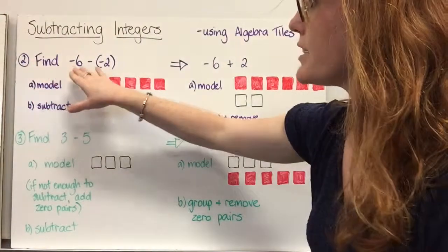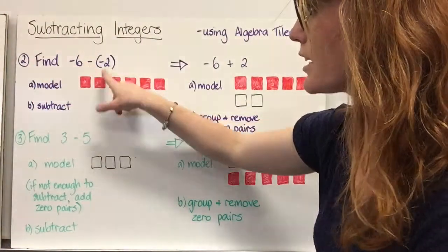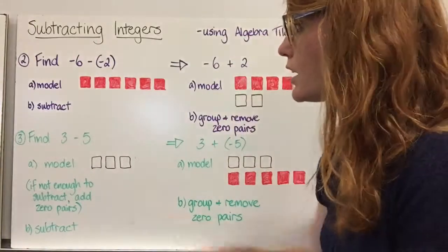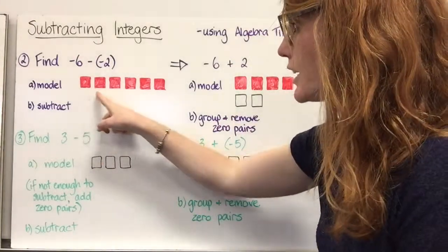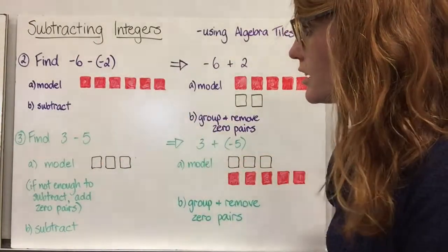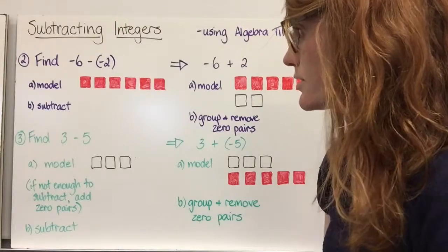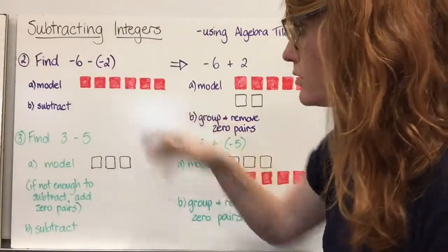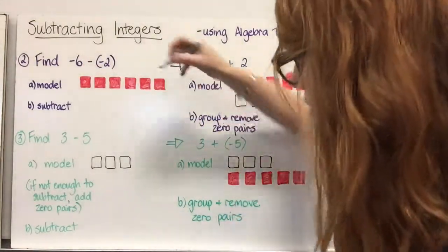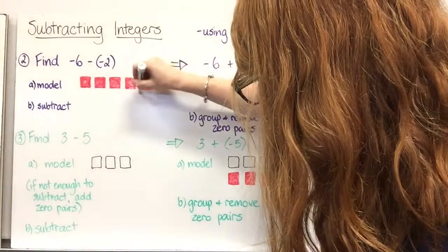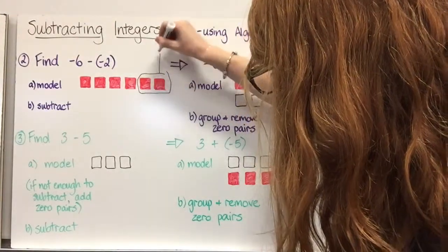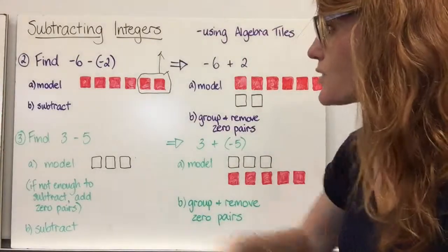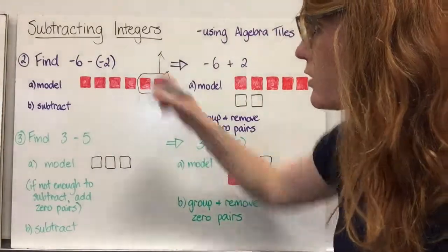Number two: find negative six subtract negative two. First we model — we have negative six. We can subtract negative two by taking two of the negative tiles away, and we are left with negative four.